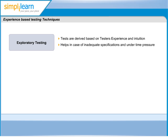Error guessing is a test design technique where the experience of the tester is used to anticipate what defects might be present in the component or system under test as a result of errors made, and to design tests specifically to expose them.